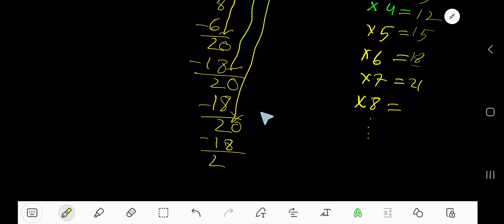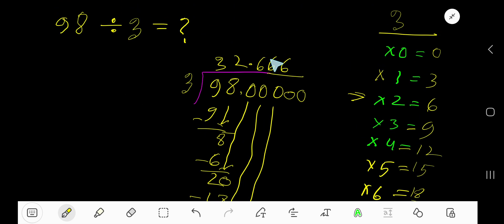You can bring down more zeros. So now you can place a dot here, or since 6 is repeating, you can place a bar over the 6. So 32 point 6 bar—this 6 bar means this 6 is repeating.